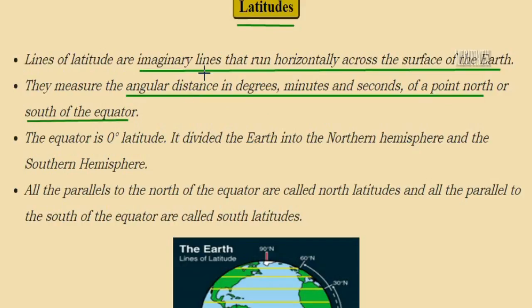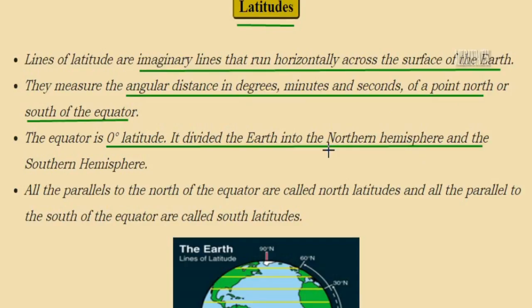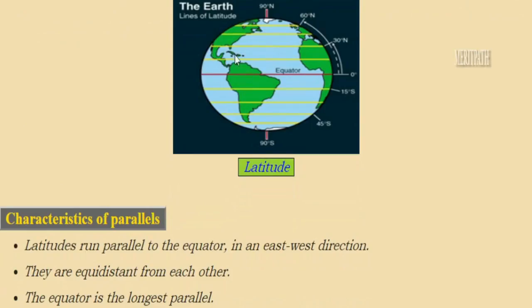Latitudes are imaginary horizontal lines that run across the surface of the earth. They measure angular distances in degrees, minutes, and seconds, or they measure a point north or south of the equator. The equator is located at zero degrees latitude and divides the earth into the northern and southern hemispheres. Lines parallel to and north of the equator are northern latitudes, while those south of the equator are southern latitudes.